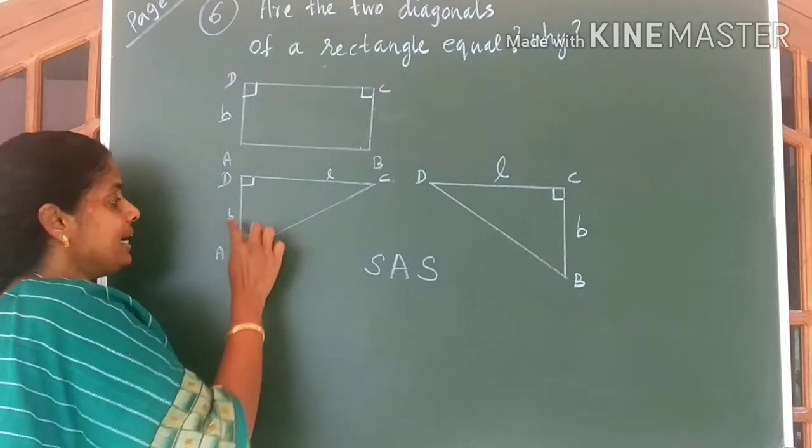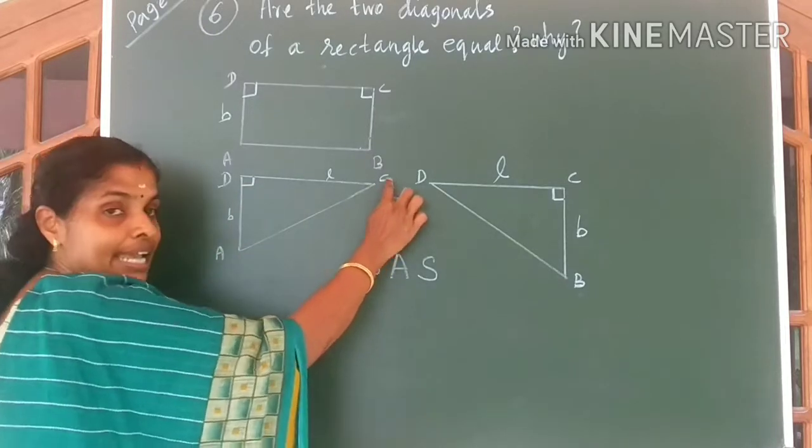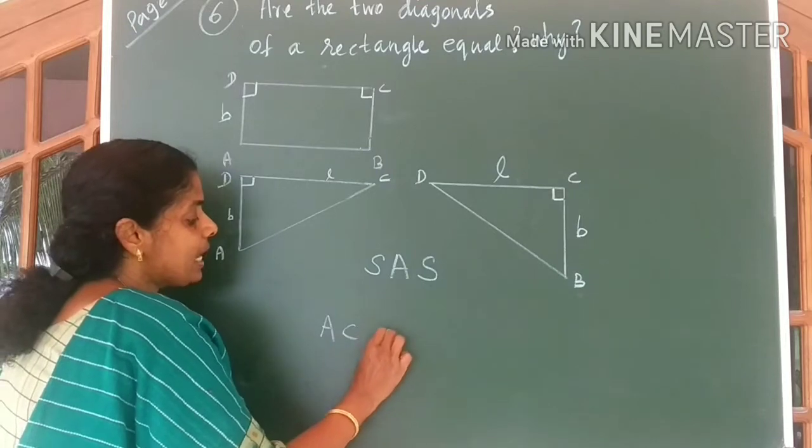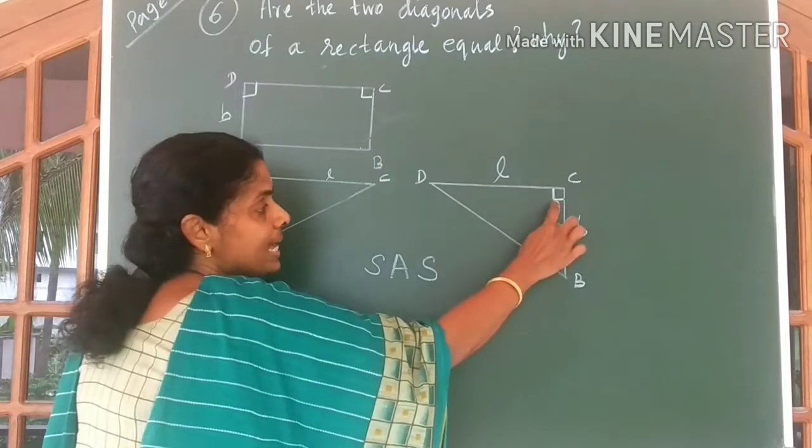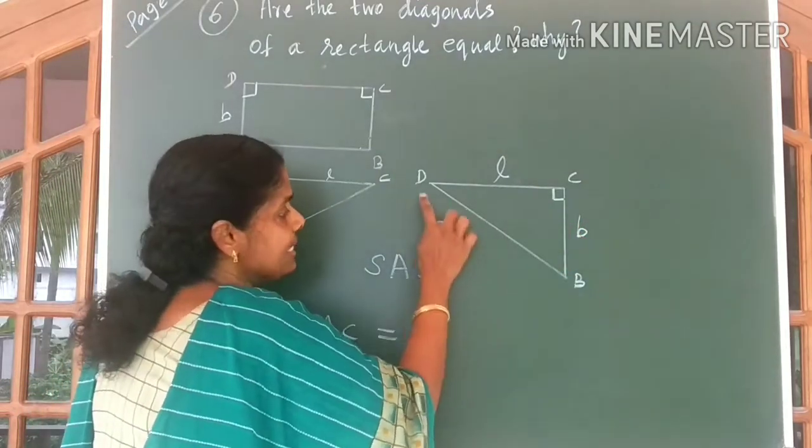Opposite to 90 degrees, we have the side AC. So we can say AC is equal to side opposite to 90 degrees is DB.